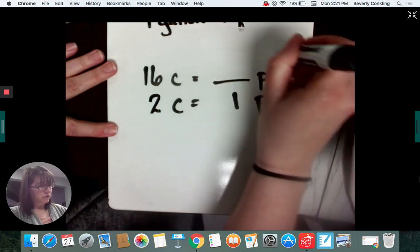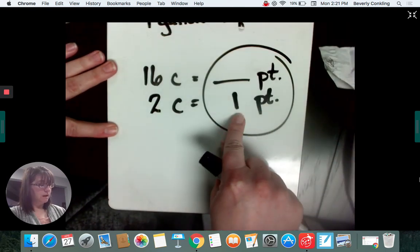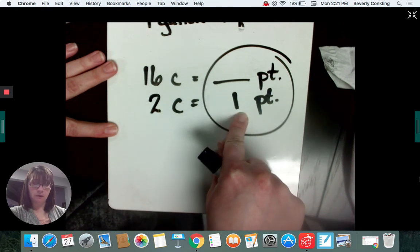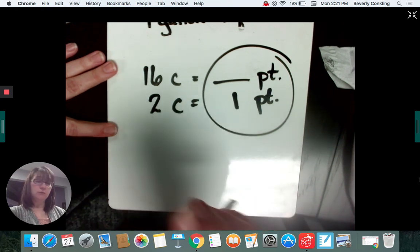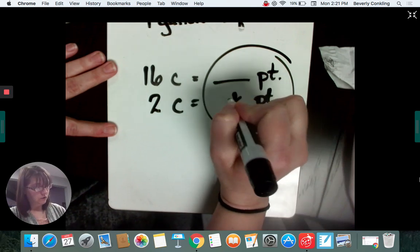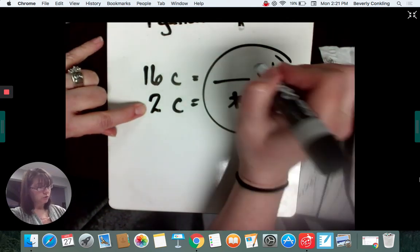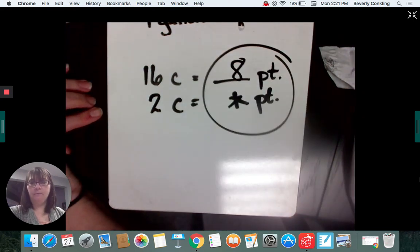All right, circle the side with the blank. Is one bigger or smaller than two? It's smaller. If I want a smaller answer, I'm going to have to divide. I never use the one. So 16 divided by two is eight.